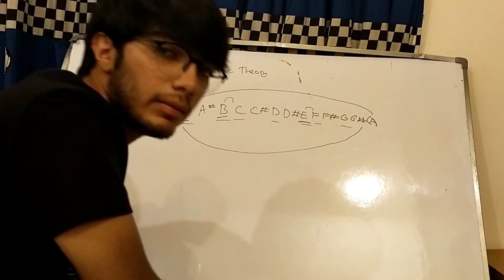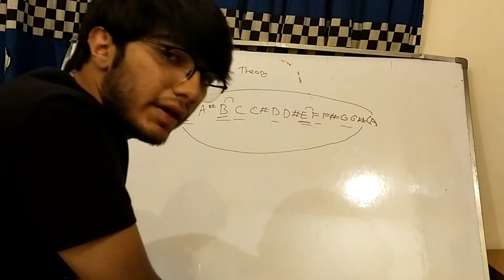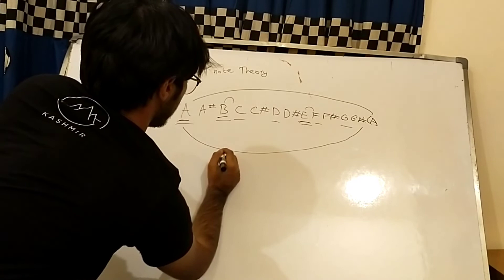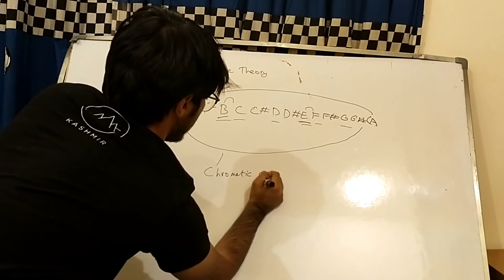So yeah, that's just the very basics of note theory and how essentially the chromatic scale is formed. This is also called the chromatic scale. So this is just one note after the other in alphabetical order, and it just loops every time it reaches A. Thank you.